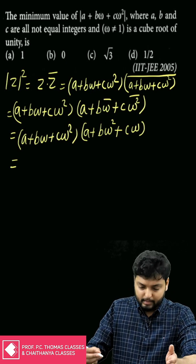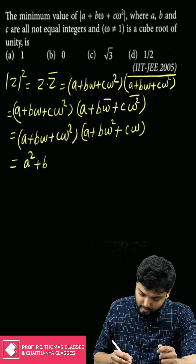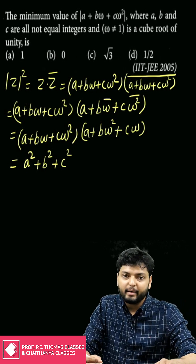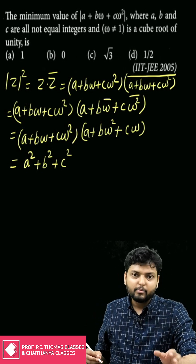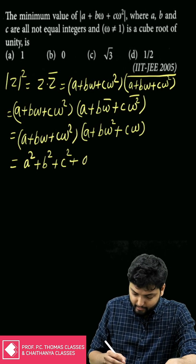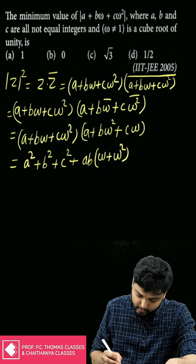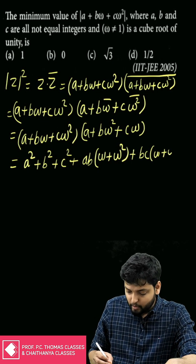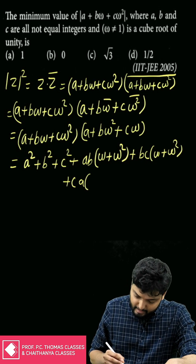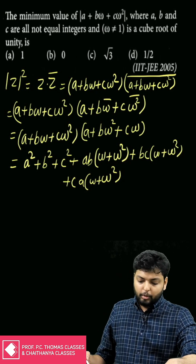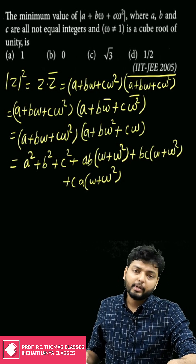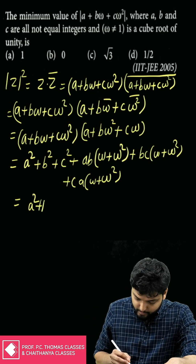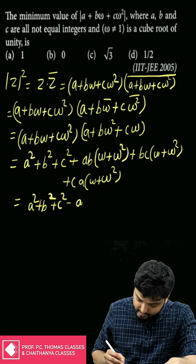Now let us expand and multiply. We get a², b², and c². For the cross terms in ab, bc, and ca, multiplying out gives ab(ω + ω²) + bc(ω + ω²) + ca(ω + ω²). Since 1 + ω + ω² = 0, we have ω + ω² = −1, so the expression becomes a² + b² + c² − ab − bc − ca.